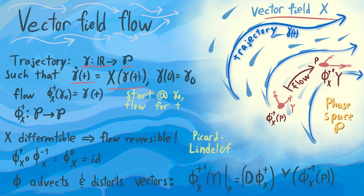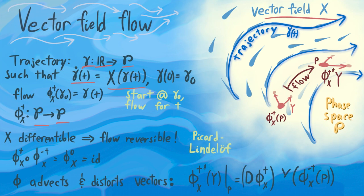So this lets us define a flow function. Given a starting point, I can say: let's move along the associated trajectory for time t and see where we end up. If we do that to all points of the manifold and move them all at time t, then we're sort of pushing everything around and we get what's called the flow function — it's a map from the phase space to itself.